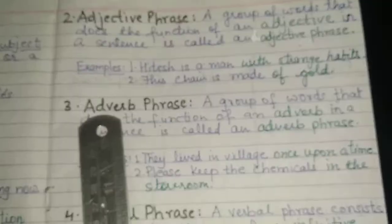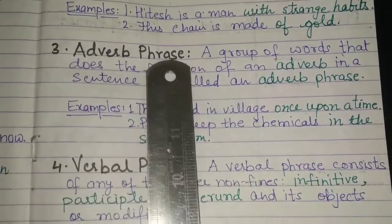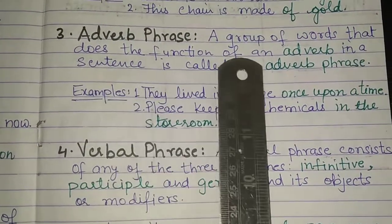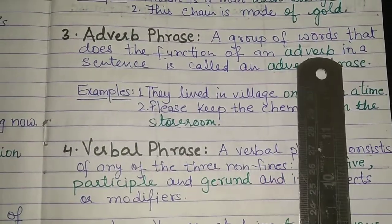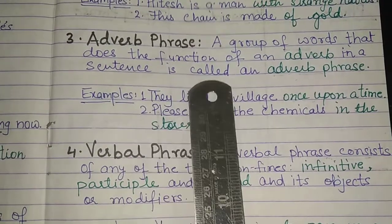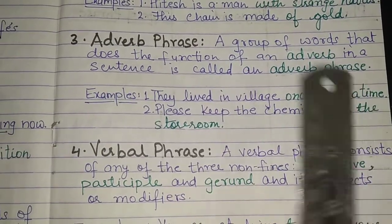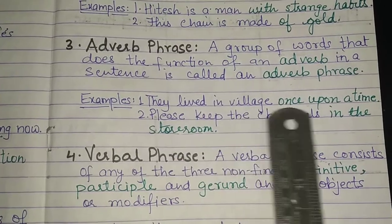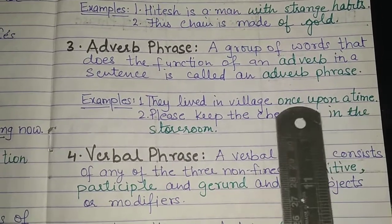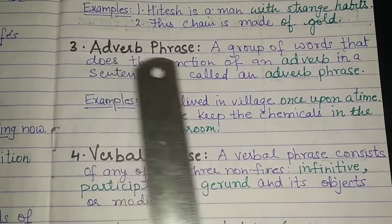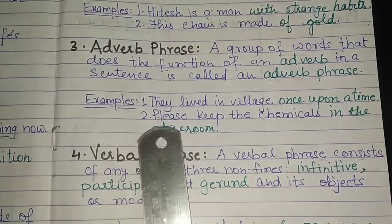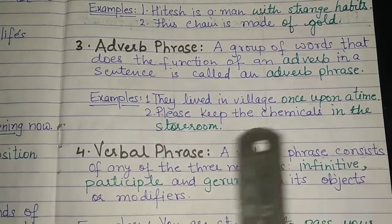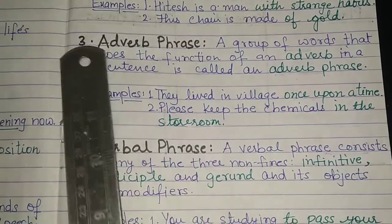Now come to the third type: adverb phrase. A group of words that does the function of an adverb in a sentence is called an adverb phrase. Examples: 'They lived in a village once upon a time' — 'once upon a time' is an adverb phrase. 'Please keep the chemicals in the storeroom' — 'in the storeroom' is an adverb phrase.